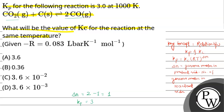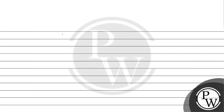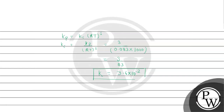The value of Kp is given as 3. Using Kp equals Kc into RT to the power delta n, with delta n equal to 1, we get Kc equals Kp divided by RT to the power 1. So Kc equals 3 divided by 0.083 multiplied by 1000 Kelvin. On calculating, it comes out to 3.6 multiplied by 10 to the power minus 2.